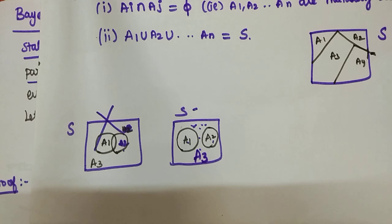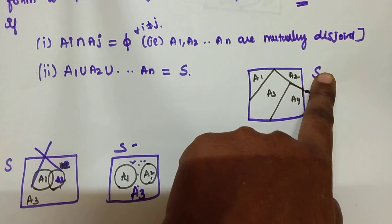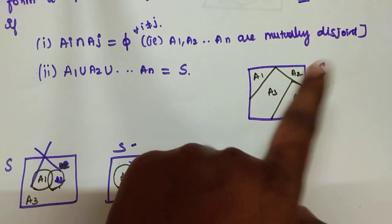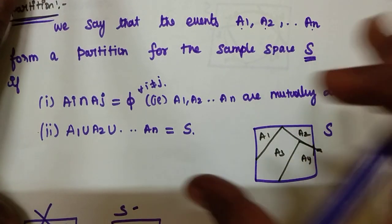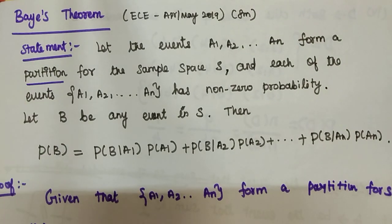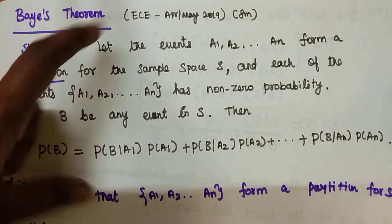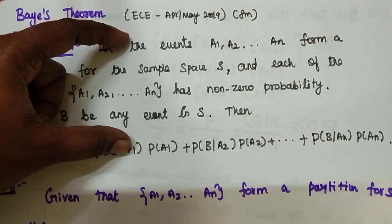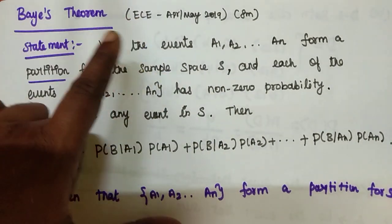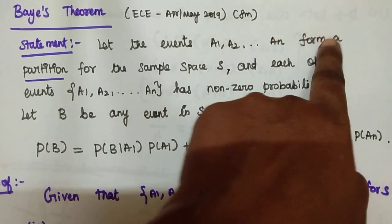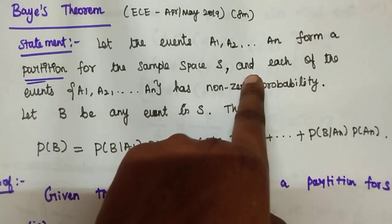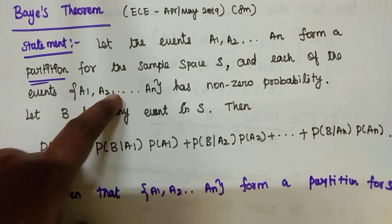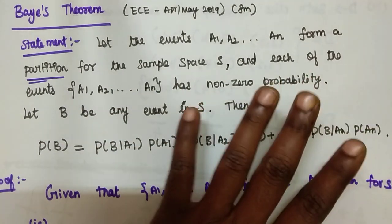This will form a partition for S. The partition definition: they will be disjoint. A1, A2, n sets of events — this is a partition. Each of the events A1, A2, and so on has non-zero probability.